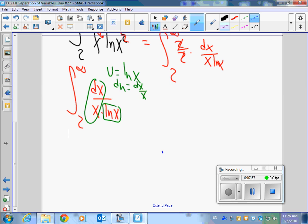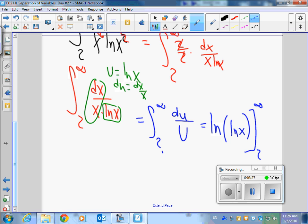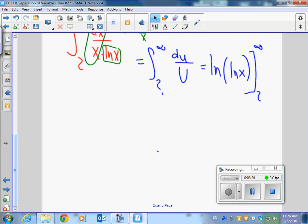So this turns into the integral from 2 to infinity of du over u. And what is that? Natural log of u, which is the natural log of the natural log of x going from 2 to infinity. And what's going to happen when I put infinity in for x? What's going to happen?